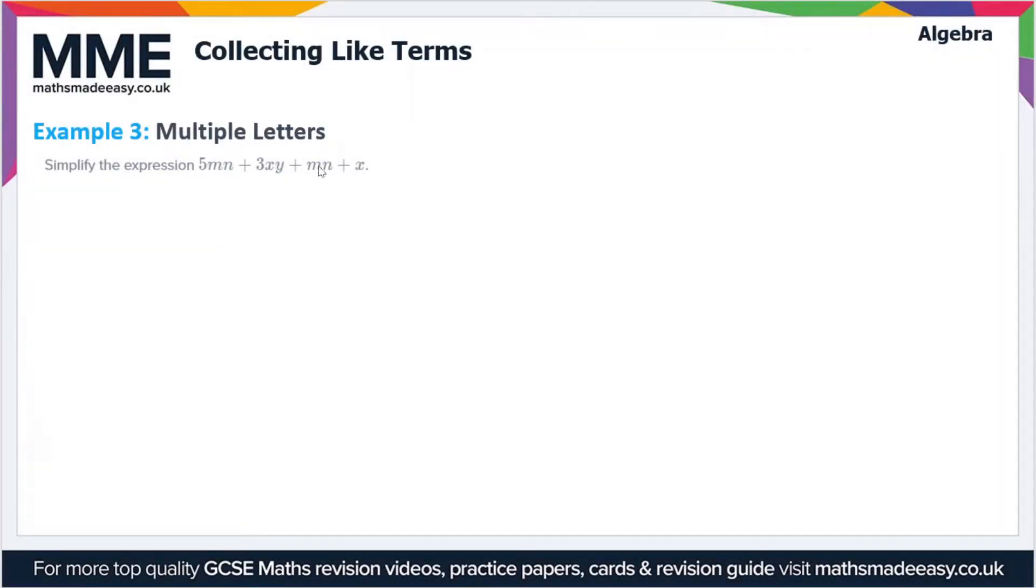So in this next example we have several different letters here. We have to simplify the expression 5mn plus 3xy plus mn plus x. So are there any like terms here? Well we have two terms in mn, that's the 5mn plus the mn on its own. So let's reorder the expression: 5mn plus mn plus 3xy plus x.